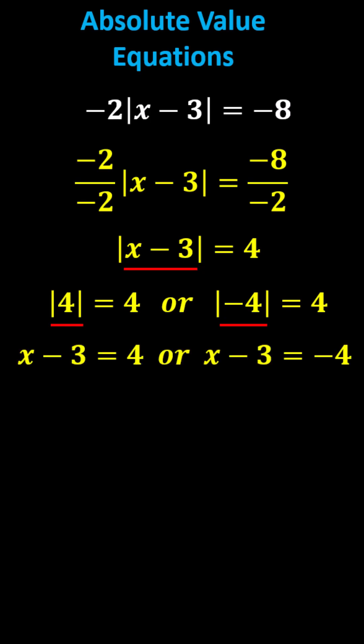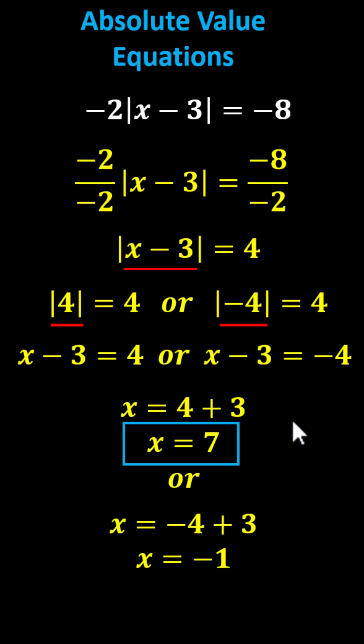We have x minus 3 can equal 4, or x minus 3 can equal negative 4. We solve both equations by adding 3 to both sides, which gives us x equals 7 from the first equation, or from the second equation we have x equals negative 1.